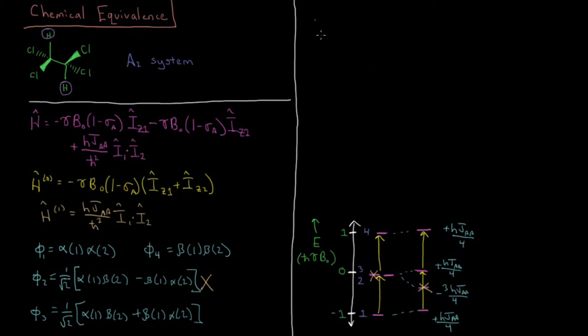So what we have is, we're going to have E1, energy of state 1, is going to be the default energy of that being H bar gamma B0 times 1 minus sigma A, and then plus the effect of the coupling which is going to be H JAA over 4. That works exactly the same as the previous video. We're going to have E4 which is just going to be plus H bar gamma B0 times 1 minus sigma A, and that also gets shifted up, H JAA over 4.